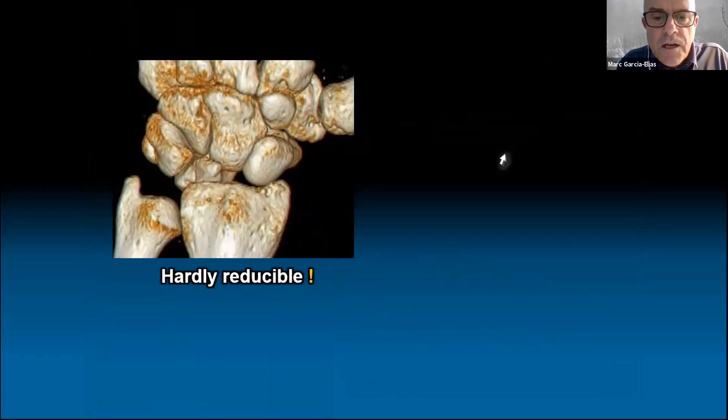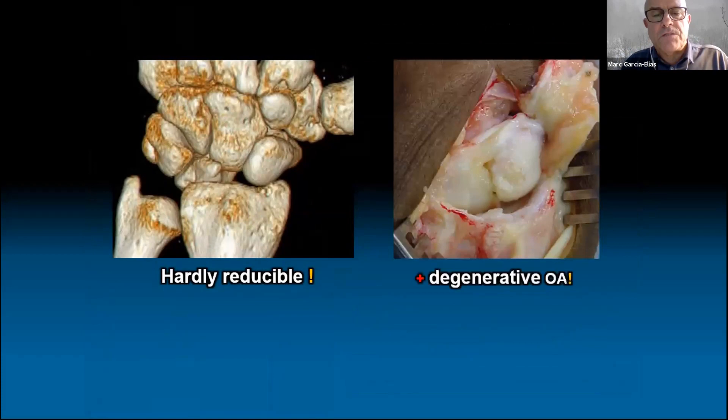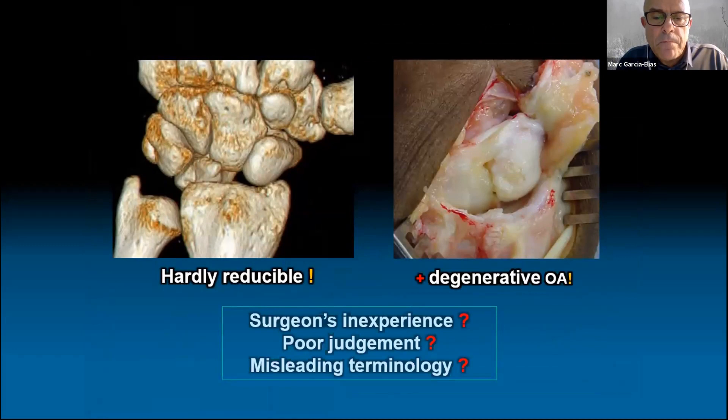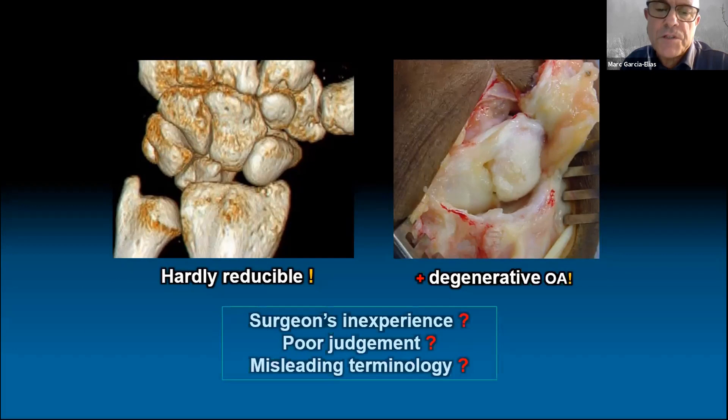Surgery was disappointing, however. The scaphoid was found dorsally subluxed and hardly reducible, with a seriously damaged proximal pole of the cartilage. Yes, there were big gaps, but the wrist was not unstable — it was maligned and stiff, but not unstable. Where's the problem? Inexperience of the surgeon? Poor judgment? Misleading terminology?